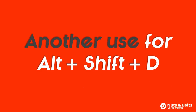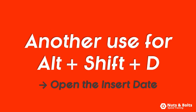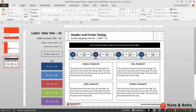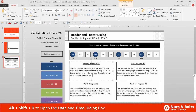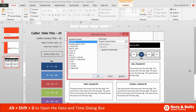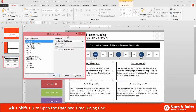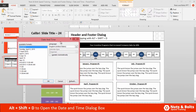So that's one way to use the Alt Shift D keyboard shortcut to open up the header footer dialog box. The second way to use that same shortcut is to open the insert date and time dialog box. The way to double dip on this shortcut is to simply click into an object that can take text. So once I'm within a text box, if I hit Alt Shift D on my keyboard, instead of opening the header footer dialog box, I get the date and time dialog box.